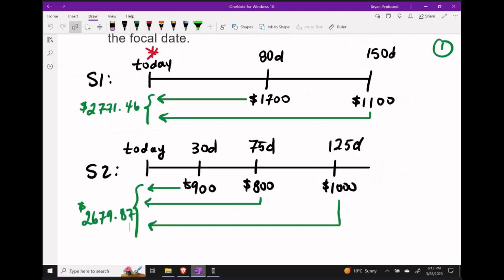Let's zoom into our time diagram to compare these two payment streams. Stream one has a fair market value of $2,771.46. Stream two has a fair market value of $2,679.87.